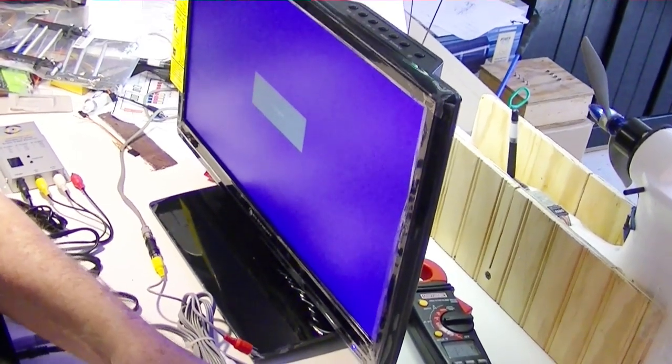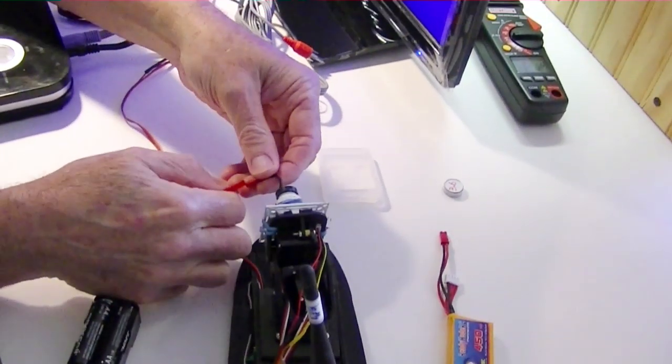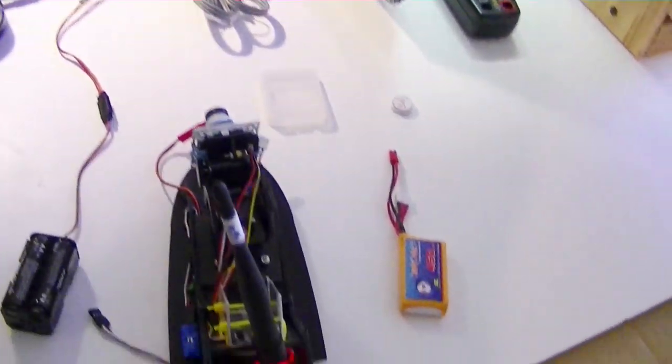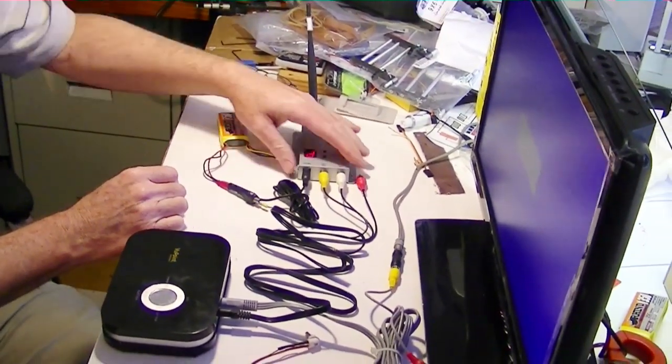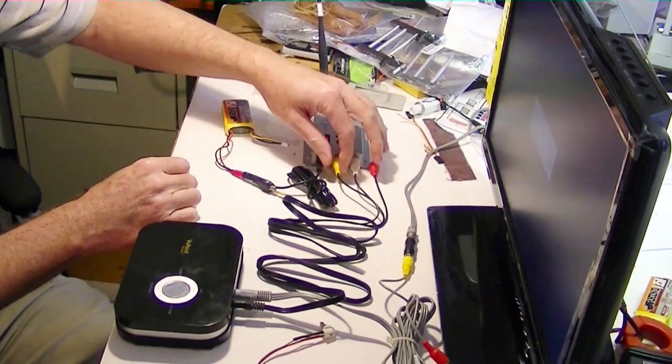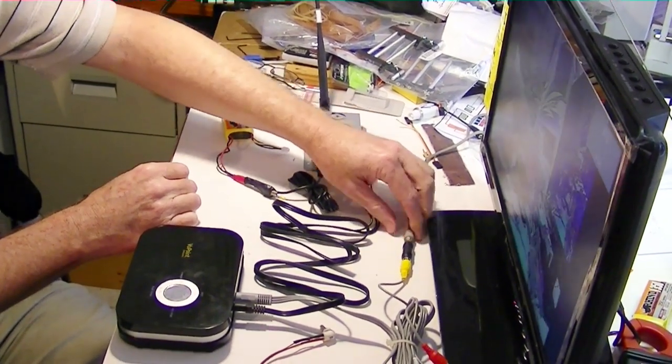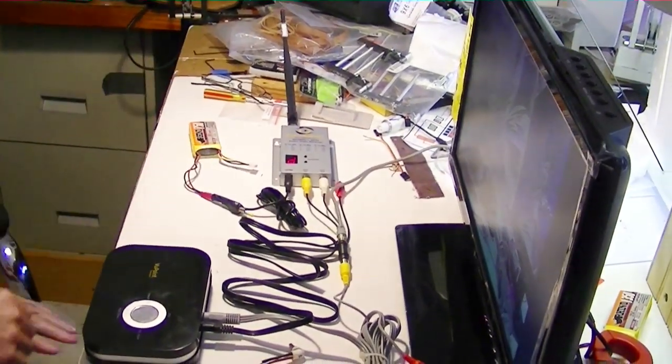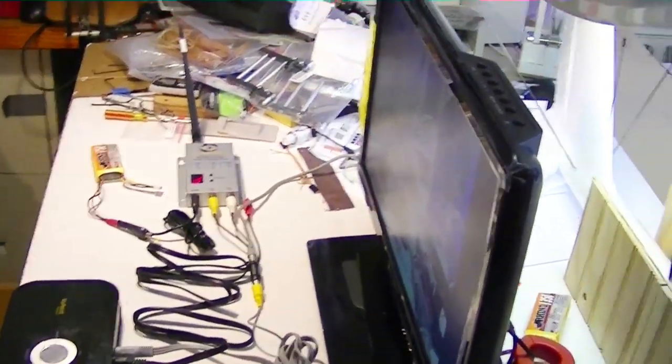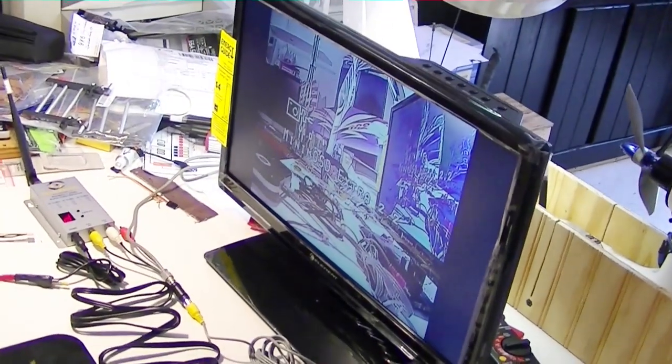I'm going to fire up my FPV video pod, fire up the receiver. Now the receiver is hooked into the composite video on the back of the monitor with this cable right there. And there's the picture. You can see it on the screen.